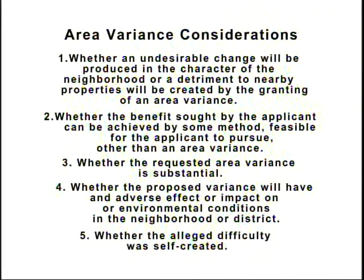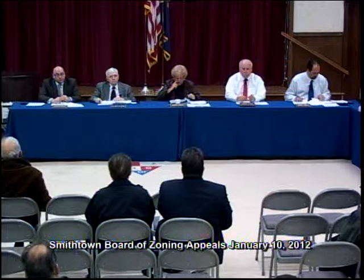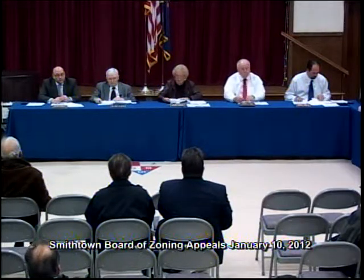New York State's statute mandates that the board must consider the following five criteria for area variances. When you come to the podium to present your application, you will need to address these five areas. Number one, whether an undesirable change will be produced in the character of the neighborhood or a detriment to nearby properties will be created. Number two, whether the applicant has other feasible alternatives. Number three, whether the variance is substantial. Number four, whether an adverse impact on the environment will be created. And number five, whether the alleged difficulty is self-created. The statute requires the board to balance the interests of the applicant and those of the neighborhood and community. The statute further requires that the board shall grant the minimum variance deemed necessary and adequate and at the same time protect and preserve the character of the neighborhood and the health, safety, and welfare of the community.